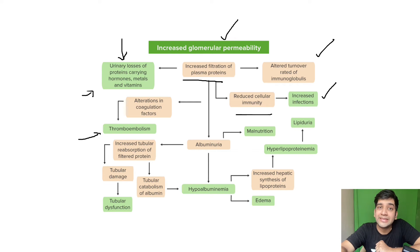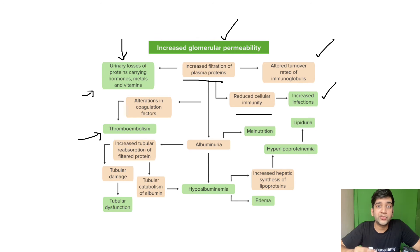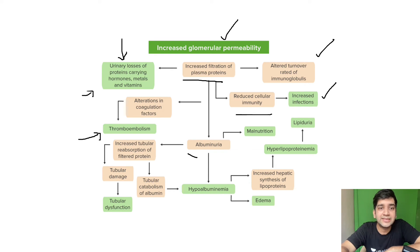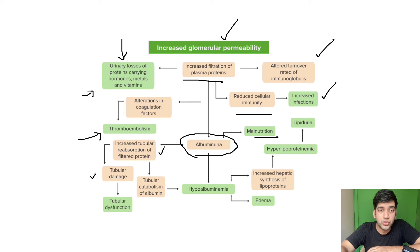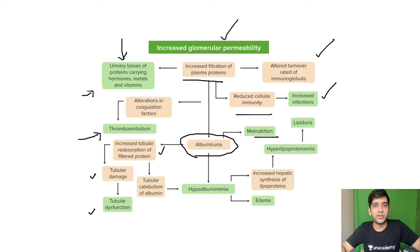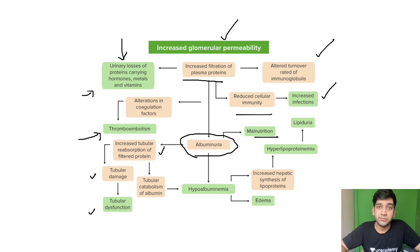Alteration of coagulation factors leads to thromboembolism risk in nephrotic syndrome. However, prophylactic anticoagulants are not routinely given because the incidence is relatively low — anticoagulation is initiated only if the patient actually presents with thromboembolism. Additionally, with massive protein loss, particularly albumin, patients can have malnutrition and weight loss. Increased tubular resorption of the filtered protein causes tubular damage and dysfunction, which can lead to mildly elevated creatinine — not necessarily fulminant renal failure.